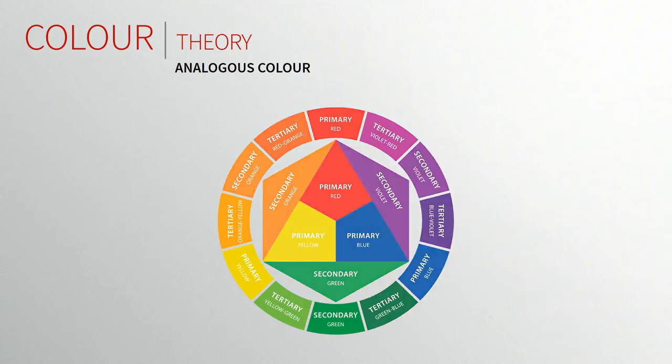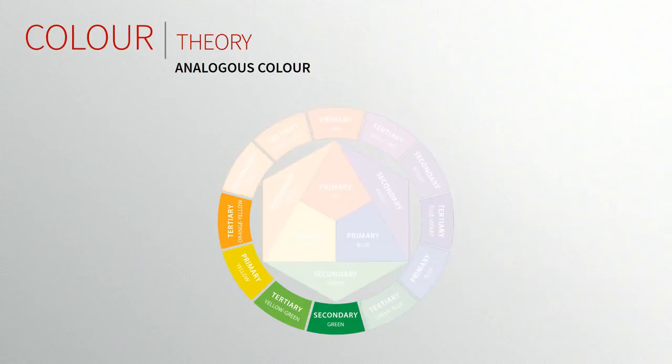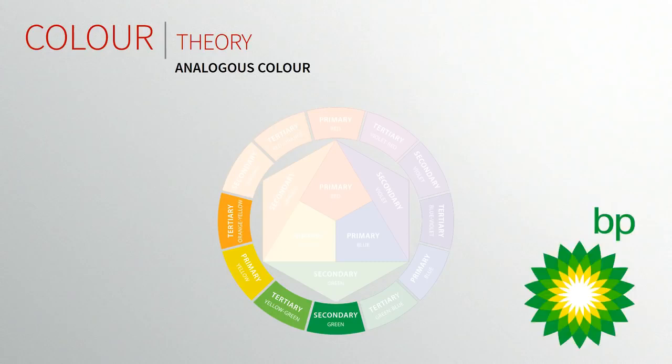Moving on, we have analogous colours. These are quite simple and quite safe when coming up with your own designs. Analogous colours basically sit beside each other on the colour wheel. For example, pick green and the colours beside it — yellow-green, yellow, and orange-yellow — those are analogous colours. They're quite easy to use in design because they won't clash with each other. If you're starting out and unsure, it's a good idea to start with analogous colours.